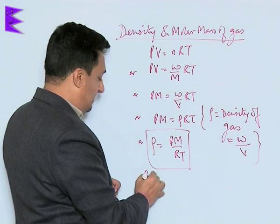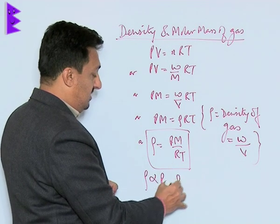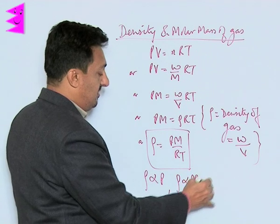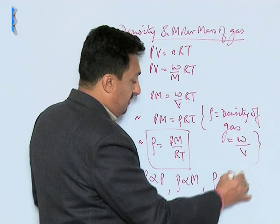Now this suggests that the density is directly proportional to pressure, density is directly proportional to molecular mass, and density is inversely proportional to temperature.